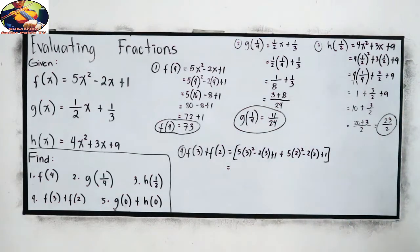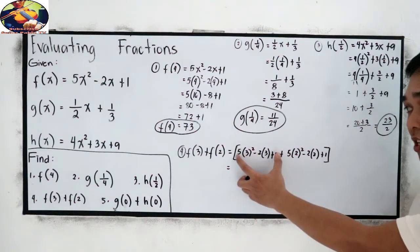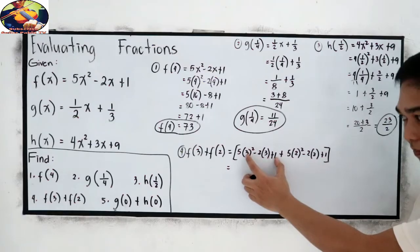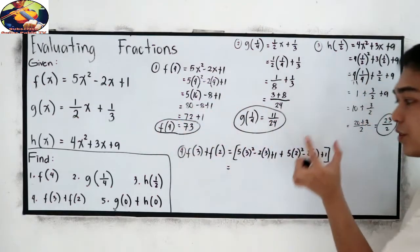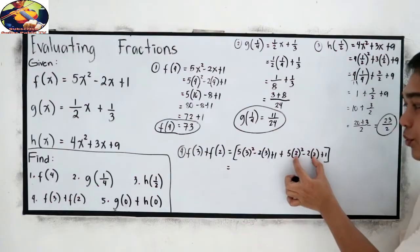5 times 2 squared minus 2 times 2 plus 1. Close. Block it. Simplify. Again, let us repeat. Change x to 3. f of 2, change x to 2.